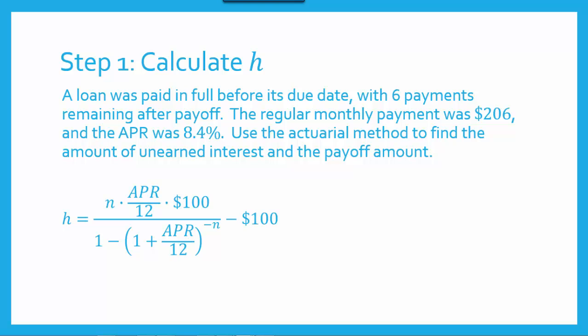So let's focus on step one. We're going to calculate H using the formula we discussed before. In the formula for H, the APR will be 8.4%, but in decimal form, so 0.084. Now remember, N represented the total number of payments, and we don't even know the total number of payments, but that's not actually necessary. In this context, N is going to be the total number of payments remaining. The amount of interest we get returned when paying off a loan early is the amount of interest we would have paid had we taken out a new loan on the remaining balance starting on that day of payoff. So in this case, N is going to be 6, because there are 6 payments remaining after today.